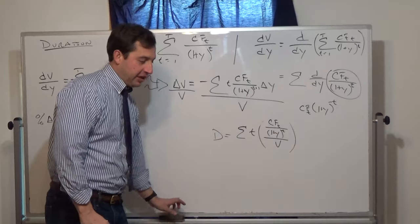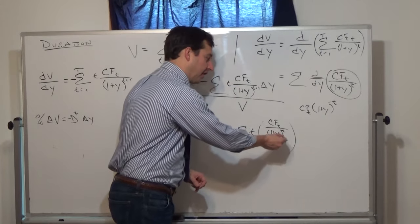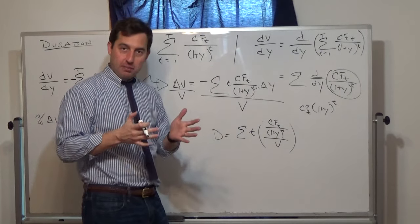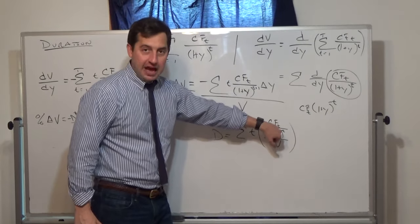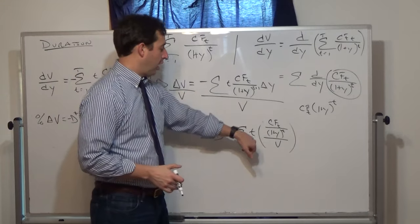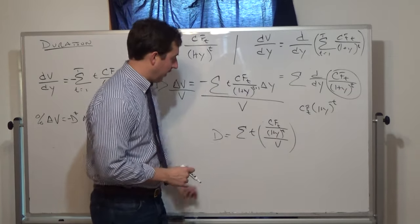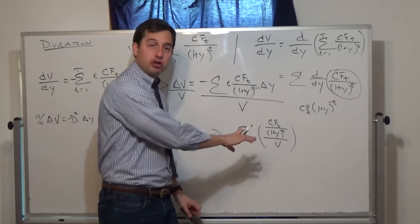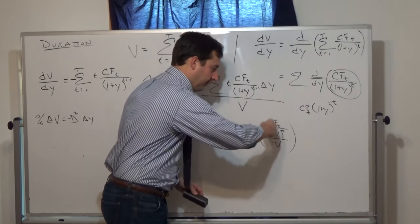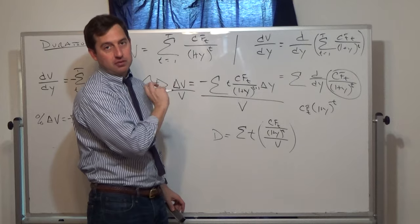This is where we get the idea that duration is the weighted average of when you receive the bond's cash flows. This term here is the present value of the t-th cash flow — the value of the bond is nothing other than taking every cash flow, taking the present value, and summing it up. So the present value of the t-th cash flow divided by V is how much of the bond's value was received at time t. If you were to sum all these terms without the t, they would all sum to 1 — so these are weights. This is the time at which you receive the payment, and this is the weight of that time. So Macaulay duration is a weighted average of when you receive the payments.